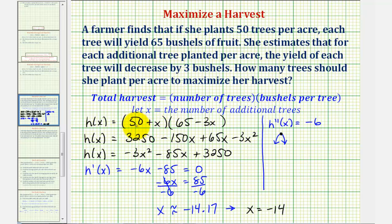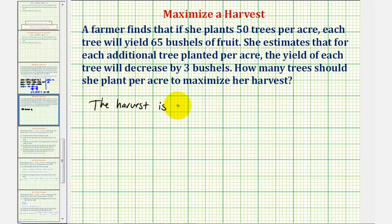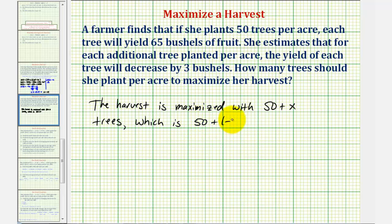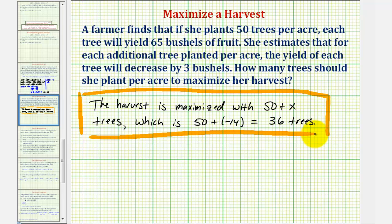So 50 trees is too many to maximize the harvest. So the harvest is maximized with 50 plus x trees, which is 50 plus negative 14, or 36 trees. I hope you found this helpful.